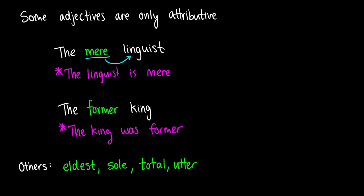Now there's a few other examples in English. So eldest. We can say the eldest daughter but we cannot say the daughter was eldest. We saw sole from before. So the sole survivor. We can't say the survivor was sole. Total, that was a total failure. We can't say the failure was total. And utter. So in a phrase like utter nonsense. We can say utter nonsense but we cannot say the nonsense was utter. Those are all examples of ungrammatical sentences.